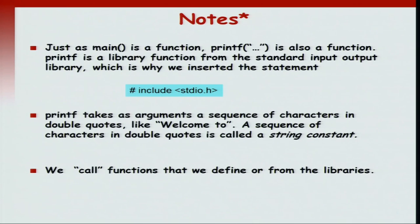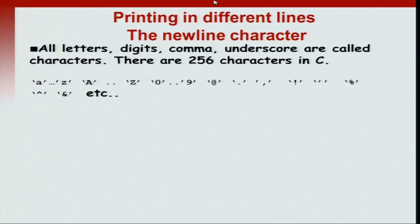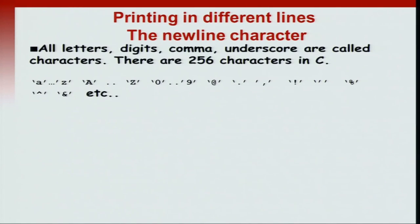The argument was enclosed in an open double quote and then ended with a closed double quote. A sequence of characters in double quotes is what is known as a string constant. We can call the functions that we define or the functions that the libraries provide. Now, the printf statements we have seen so far print a message and then the terminal prompt comes immediately after the print. Typically what we want is to print a message and then tell the prompt to appear on the next line, and for this we need what is known as the newline character. All letters, digits, comma, and punctuation symbols are all called characters in the C programming language; there are a total of 256 characters in C — 256 is 2 to the 8.